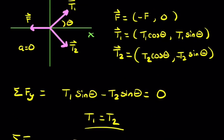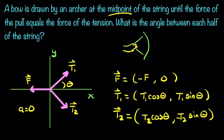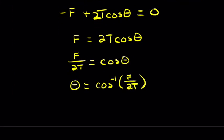Now there's something else that we know here. The pull equals the force of the tension. Okay, that's important. What does that mean? It means that F equals T. And that's good because these cancel, and we're left with theta equals cos inverse of a half.